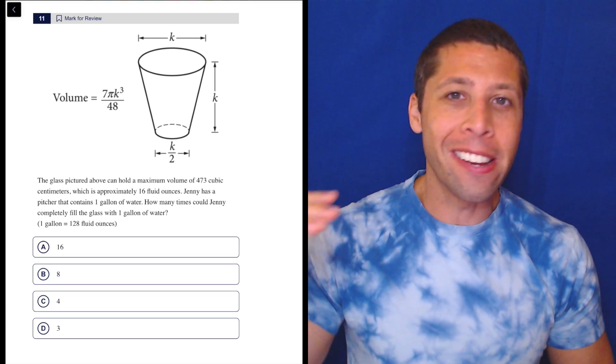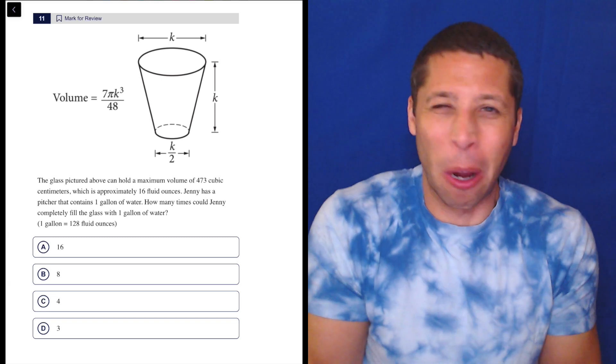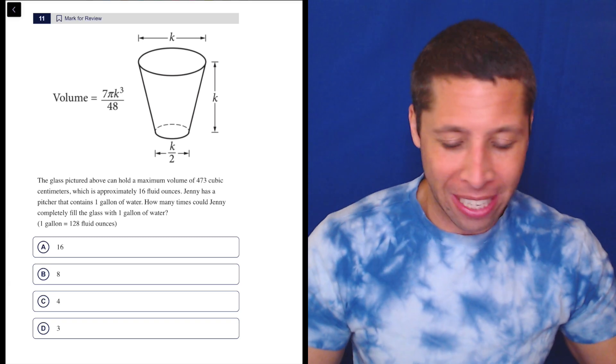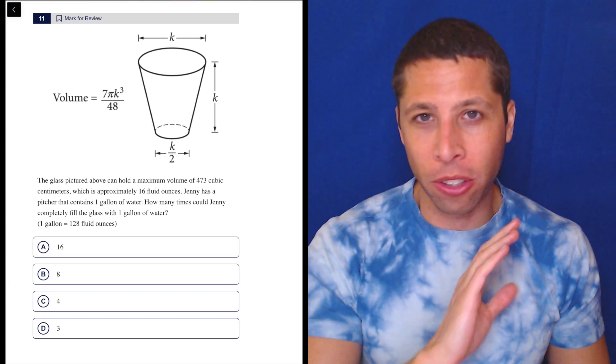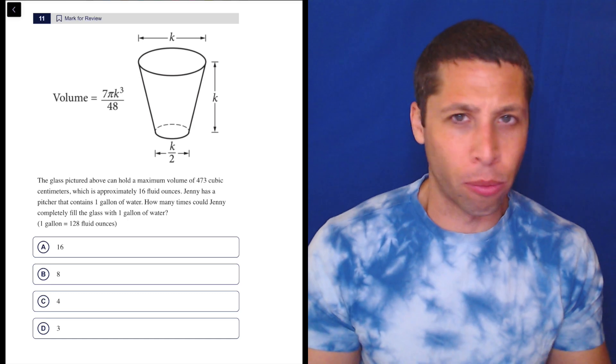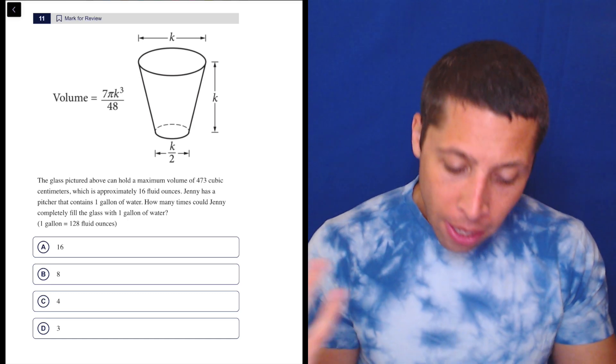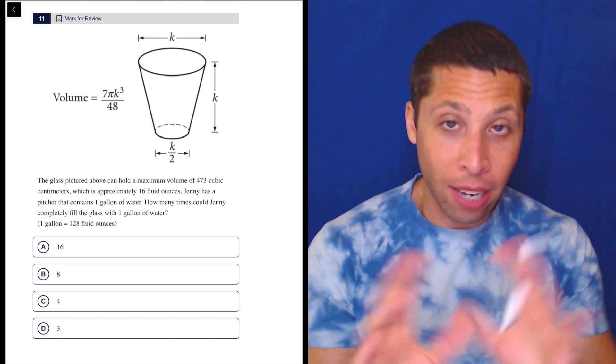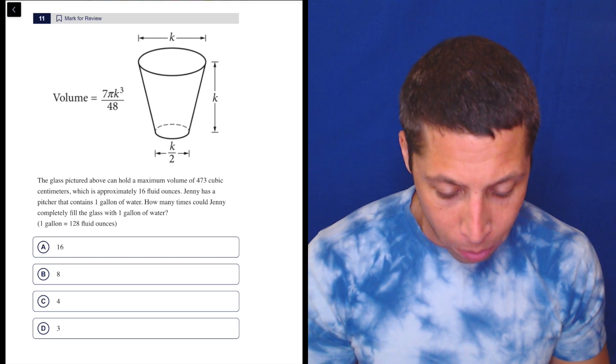They used to have multi-question, almost like passages for the reading section. Don't worry about it. They don't do this on the real test anymore, so you're not going to get a situation where you have just random information like this. But this particular question is kind of individually a unit conversion question, so we might as well do it.